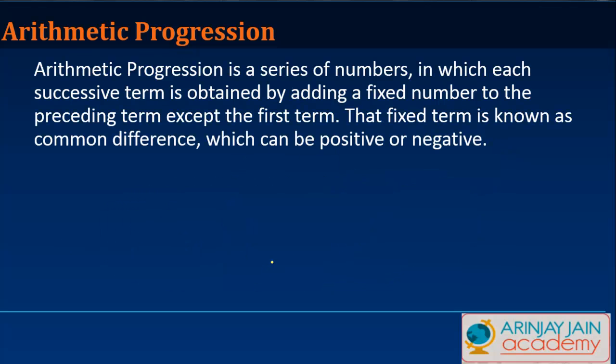I would like to read this particular paragraph. Arithmetic progression is a series of numbers, in which each successive term is obtained by adding a fixed number to the preceding term except the first term because somewhere it has to start. That fixed term is known as the common difference, which can be positive or negative.